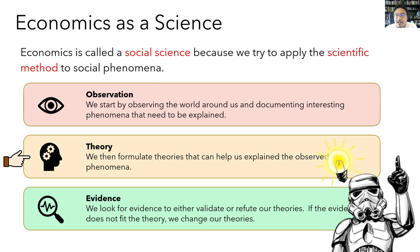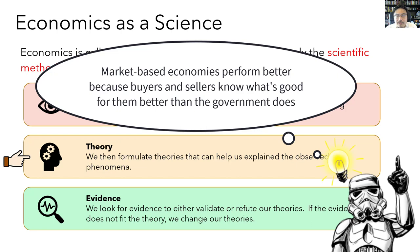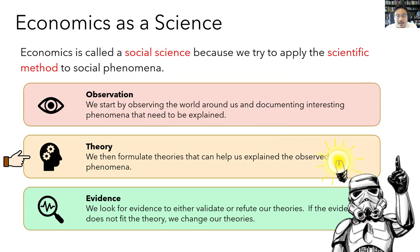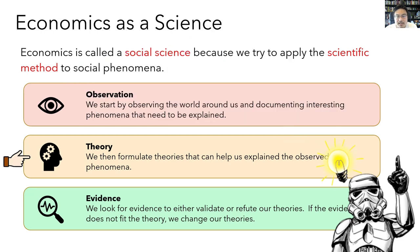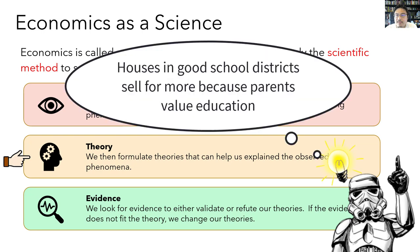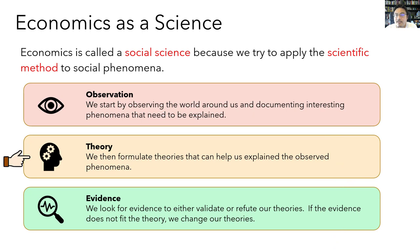After making observations, the next step is to formulate a theory to explain them. Perhaps market-based economies perform better because individual buyers and sellers know more about what's good for them than a government planner does. Perhaps governments are more involved in healthcare and education because there are unique characteristics in those industries that make the private sector less efficient. And perhaps houses in good school districts sell for more because parents value their children's education. These are all theories that can be used to explain the observations.